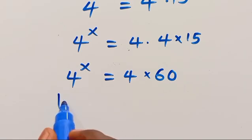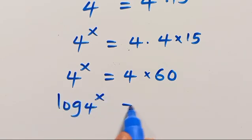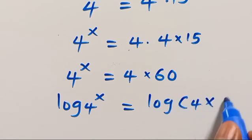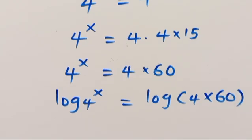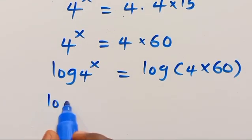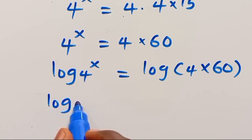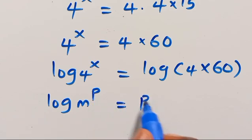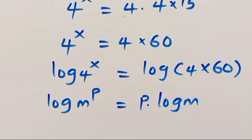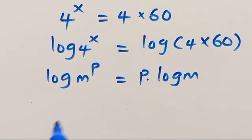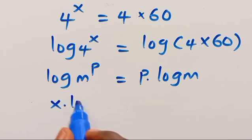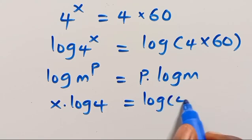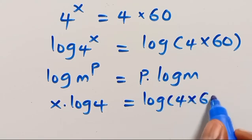Let's introduce log. Log 4 to the power of X equals log of 4 times 60. When we have log M to the power of P, the power P comes down to give P multiplied by log M. So from here, we have X times log 4 equals log of 4 times 60.